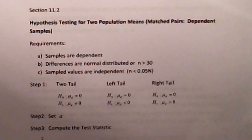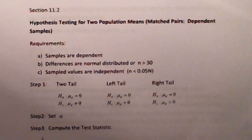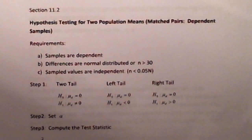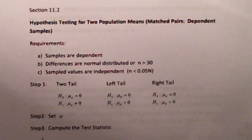There are going to be two different types of hypothesis tests involving two unknown population means: where pairs or samples are dependent upon each other versus where samples from the two different populations are independent. First we'll look at the case where the samples chosen from the two different parent populations are dependent upon each other. This is called a matched pairs hypothesis test for two unknown population means.